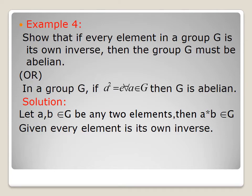Example 4: Show that if every element in a group G is its own inverse, then G must be abelian. In another form: in a group G, if a² = e for all a in G, then G is abelian. When a inverse equals a, from the inverse property a·a⁻¹ = e, substituting a⁻¹ = a gives a·a = a² = e.